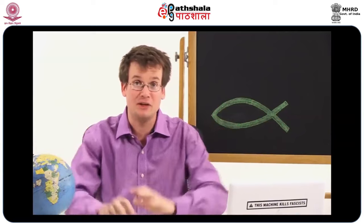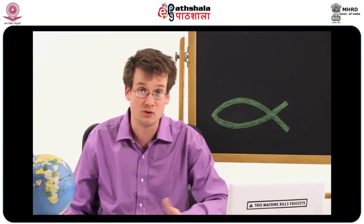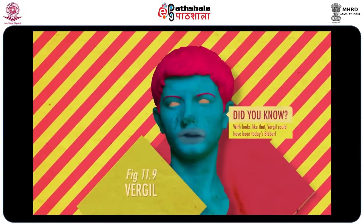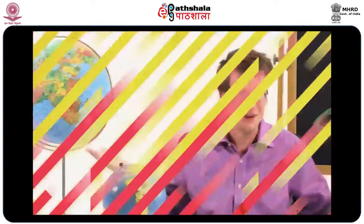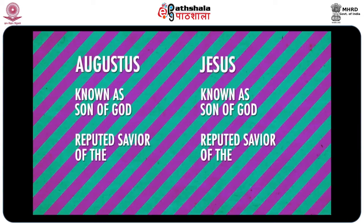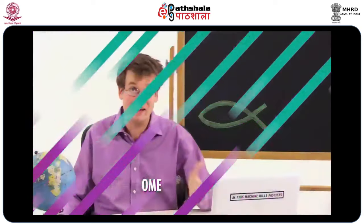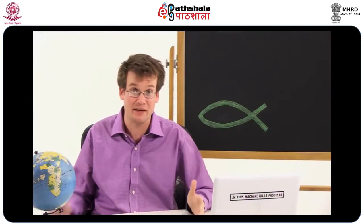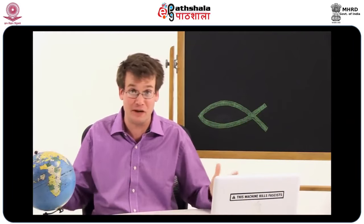The idea of a Messiah was not unique to the Jews. Even the Romans got in on the action — the Roman poet Virgil wrote of a boy who 'shall free the earth from never ceasing fear, he shall receive the life of gods.' But Virgil was writing about Emperor Augustus. Both Jesus and Augustus were called sons of God and sent to free the earth from fear, but one ruled the largest empire in the world and the other believed that empire needed to change dramatically.